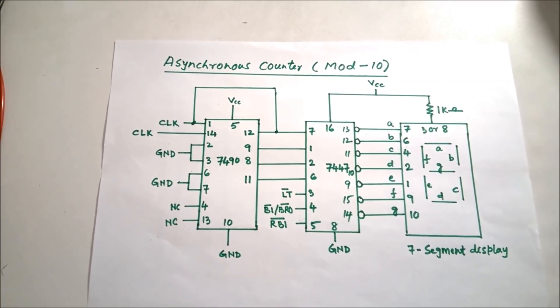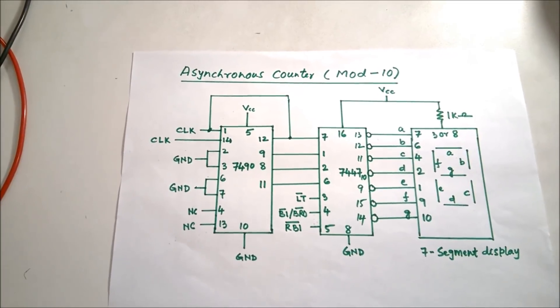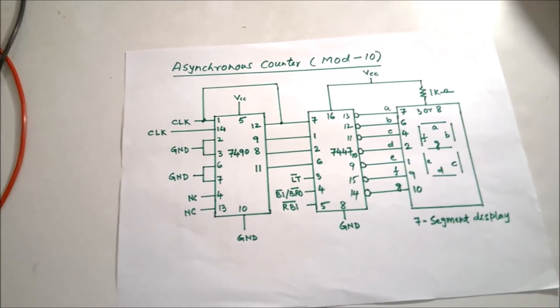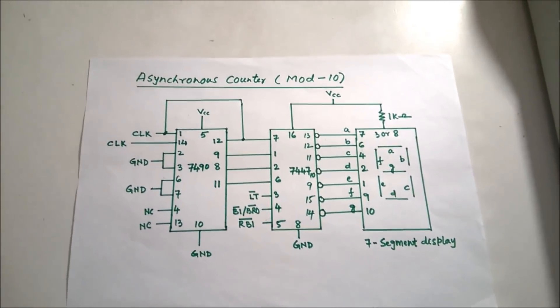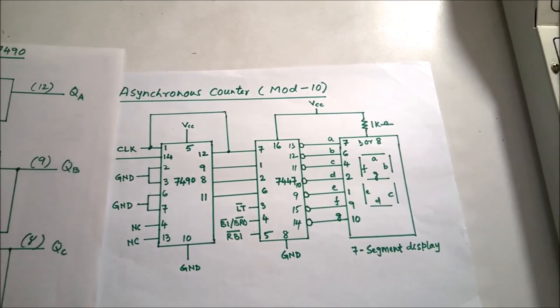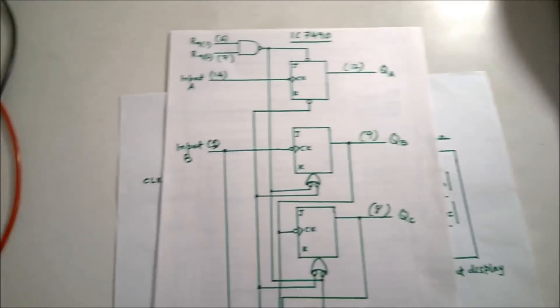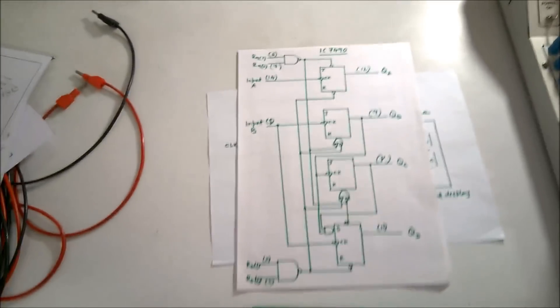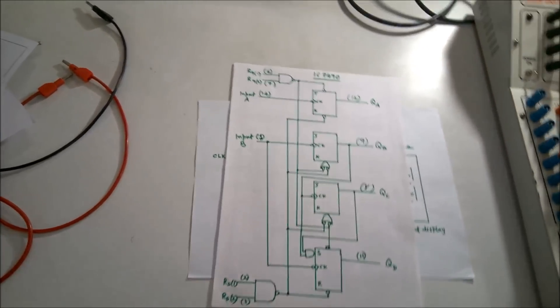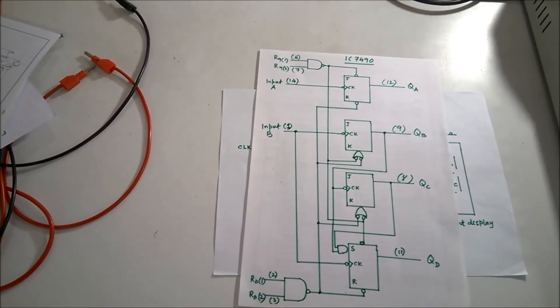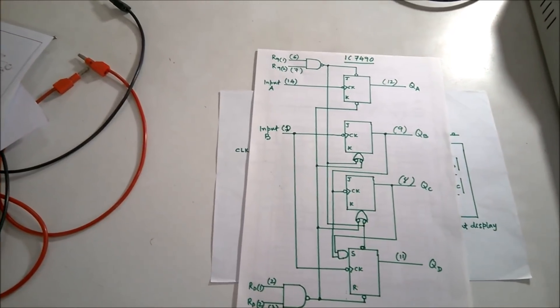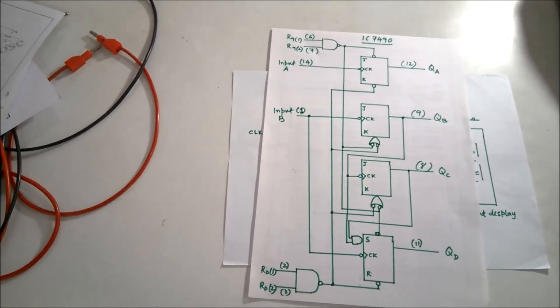Now we are going for mod 10. To understand how mod 10 works, we need to understand the 7490. It has four flip-flops and two reset groups. When the resets are deactivated, it will display from 0 to 9.